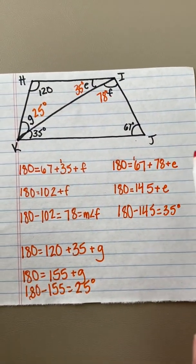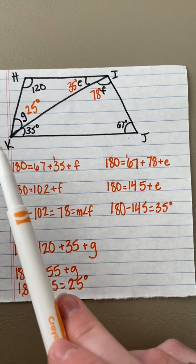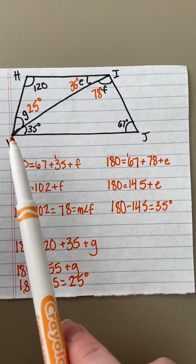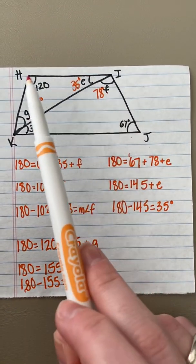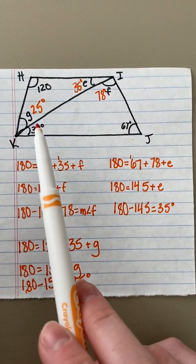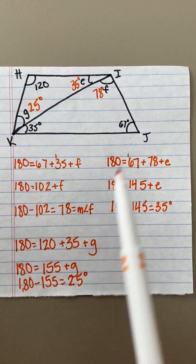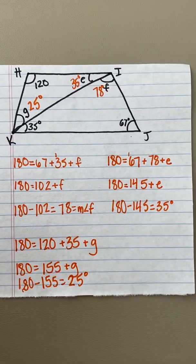So I was able to use the properties of a triangle and trapezoid to help me find my unknown angles. Remember that the angles that are between parallel lines have a sum of 180 degrees. So again, angle K plus angle H equals 180 degrees. Angle J plus angle I equal 180 degrees.